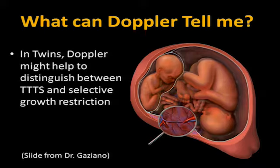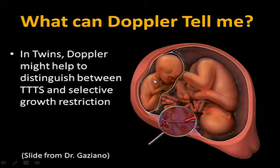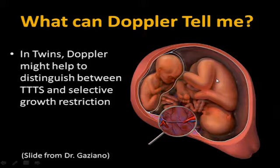Doppler can help us with our twin assessment, especially with monochorionic twins, which are going to have some type of vessel sharing. About 15 to 20 percent of monochorionic twins can develop a problem with unequal sharing of the placenta. It helps us identify twin-to-twin transfusion syndrome — the polyhydramnios-oligohydramnios sequence — versus selective growth restriction, where one baby has a smaller part of the placenta but still has a normal stomach and bladder. We assess the fluids and the Doppler to define which pregnancy has twin-to-twin versus selective IUGR.